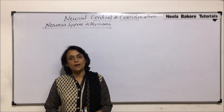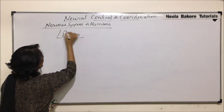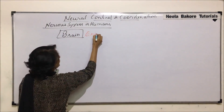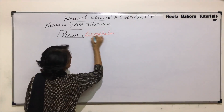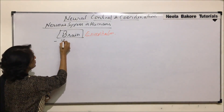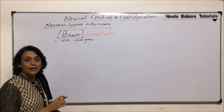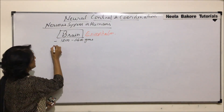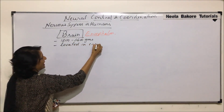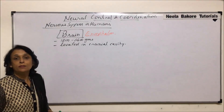We will now start with the first part of CNS, that is the brain. The brain is also known as encephalon. In normal adults, the weight of the brain is about 1200 to 1400 grams. The brain is located in the cranial cavity, which is also known as the cranium or brain box.